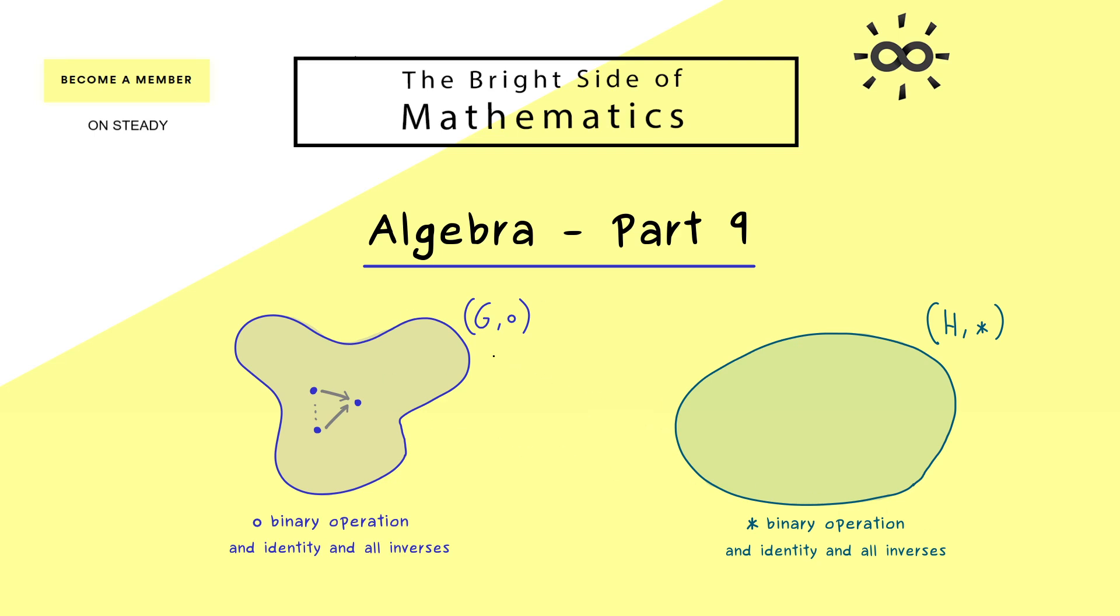And therefore whenever we have a map between two groups, it would be nice if this structure could be conserved. So we want to have a map φ which preserves the structure of the group. So more precisely this means that the binary operation should be conserved, the identity element and all the inverses. And if we have that, then this group structure preserving map is called a group homomorphism.